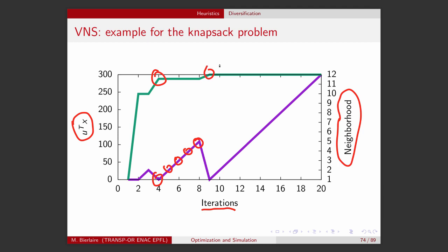We've reached this value of the utility function and reset the neighborhood size back to 1. Now, as you can see from this line, we try all possible neighborhood structures and none of them is able to improve the solution. Therefore, once we reach k equals 12 — the maximum neighborhood size — we stop and provide the current candidate as the solution of the algorithm.